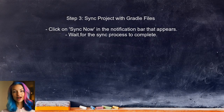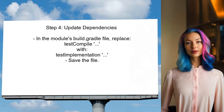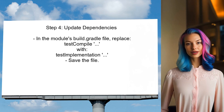After updating the plugin, sync the project with Gradle files — this step is crucial to apply the changes made. Finally, replace test compile with test implementation in the dependencies section of the module's build.gradle file. This change is necessary for compatibility with newer versions.